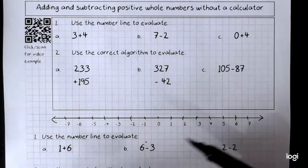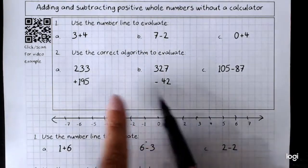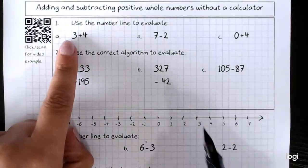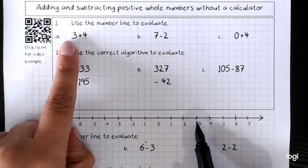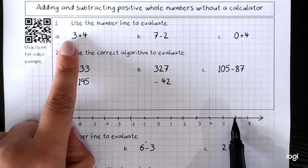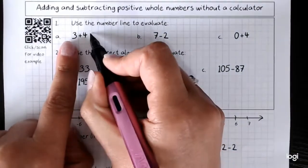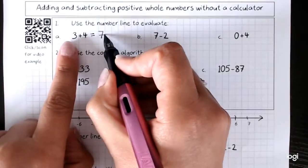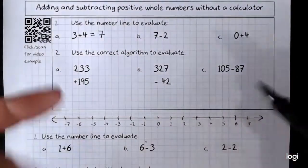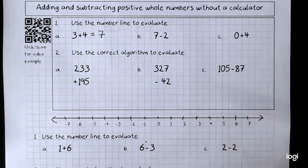If we're subtracting, if we're overall losing, we move to the left. So 3 plus 4, go to 3. 1, 2, 3, 4. This equals 7. Which is pretty obvious, but using the number line will help us in the future.